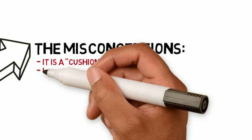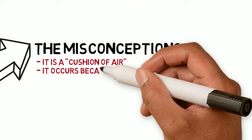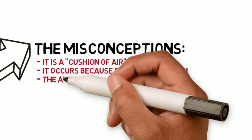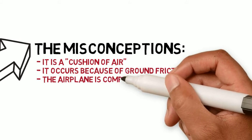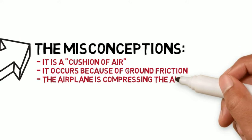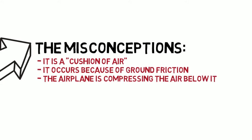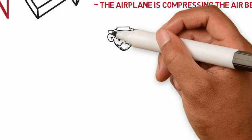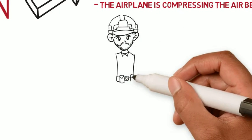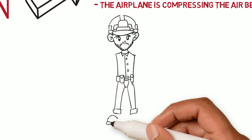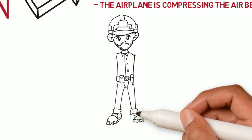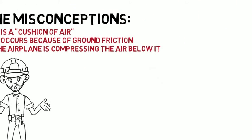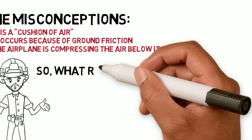It's believed to be a cushion of air. A lot of times people will say it occurs because of ground friction, or they'll say that the airplane is actually compressing the air below it, causing more lift to occur when you're coming in real close for landing. There are a lot of CFIs and tons of students that really do not understand what ground effect is, so they'll tell you one of these misconceptions to avoid being able to explain it precisely.